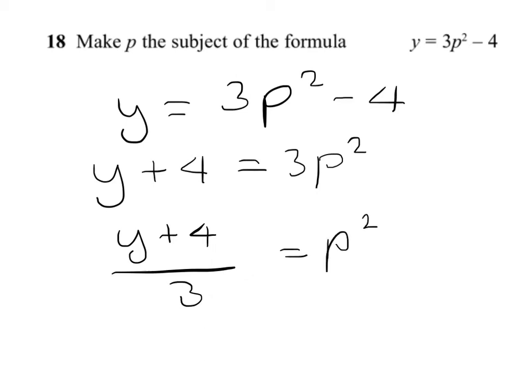And to finish, we need to take the square root of both sides to remove the square on the p to make p the subject.